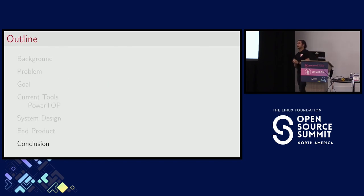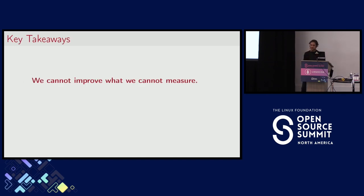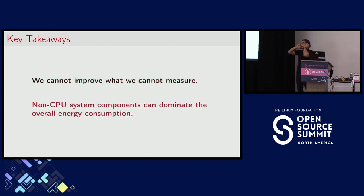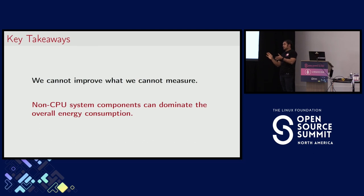If you forget everything I just talked about, please remember these two things. First: we cannot improve what we cannot measure — we must first learn to measure something correctly before improving it, and this applies beyond just energy. Second: we need to break out of a CPU-centric worldview. Non-CPU system components can dominate your overall energy consumption. As one example, I have seen references stating that DRAM is now the dominant energy consumer in data centers — though I'm not a data center operator, so please verify that claim independently.